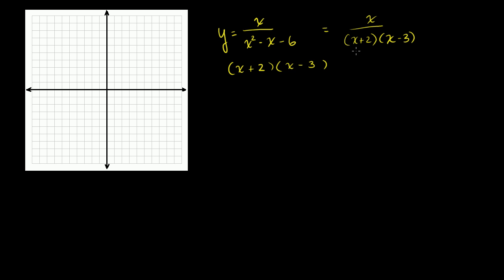Since x plus 2 doesn't cancel out with anything in the numerator, and x minus 3 doesn't cancel out with anything in the numerator, we know these can be used to find our vertical asymptotes. The vertical asymptotes are when either that term is equal to 0, or when that term is equal to 0, because at those points our equation is undefined. This is equal to 0 when x is equal to negative 2, and this is equal to 0 when x is equal to positive 3.